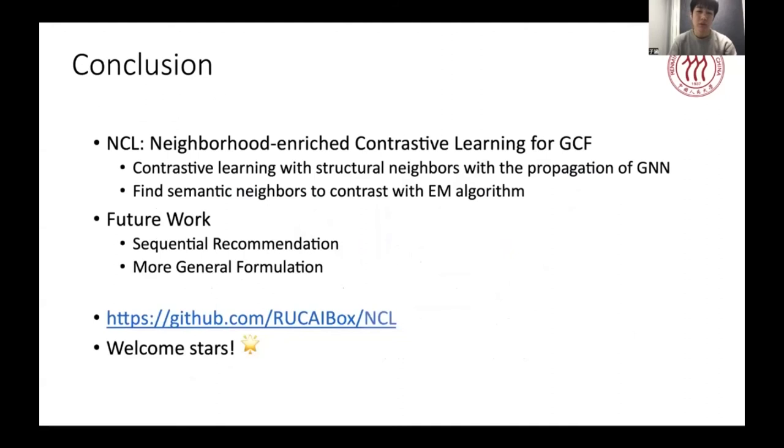Overall, we proposed a novel contrastive learning paradigm named neighborhood-enriched contrastive learning for graph collaborative filtering. The key idea is to find the potential node relatedness in different ways and capture it by contrastive learning efficiently. For future work, we aim to extend our framework to other recommendation tasks, such as sequential recommendation, and develop more general formulation for neighborhood-enriched contrastive learning. Our code is also released, and welcome to star. Thanks.